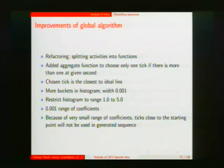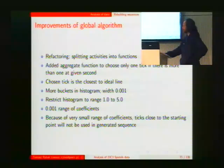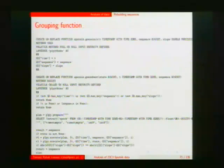I refactored the code, changed values, restricted histogram to use the smallest range of slopes, and added a grouping function so it does not use more than one point on every second.